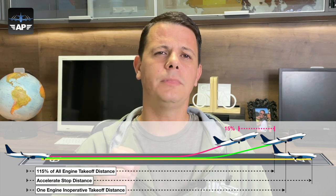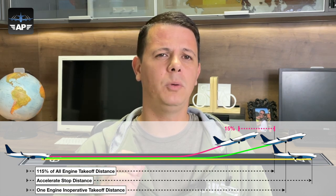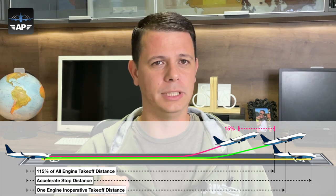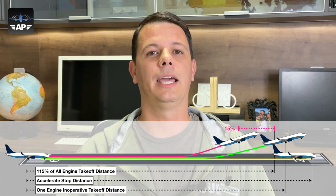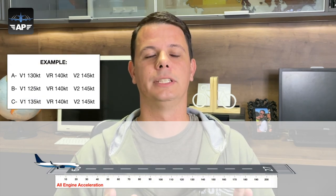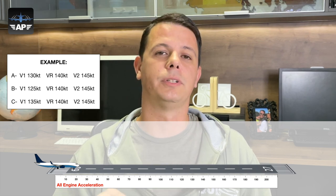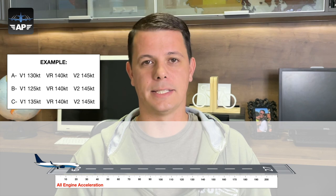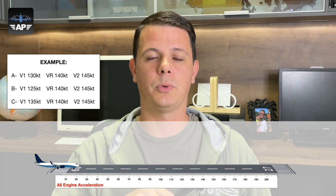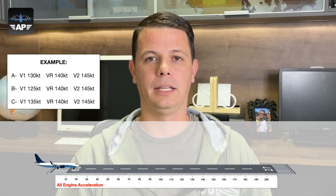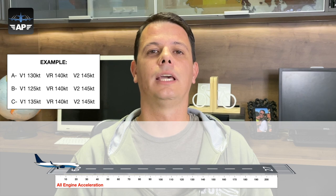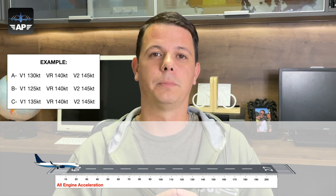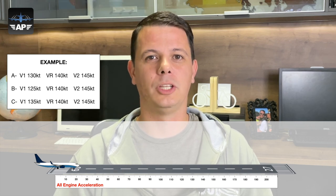What people sometimes don't understand is why V1 affects the engine-out go distance. I'm going to bring a scale here. This scale does not measure distance — it states at any point of the runway at which speed the airplane is. For example, when you read 80 on the scale, that means that at this point of the runway the airplane is already at 80 knots. The acceleration is not a constant thing, but for the purpose of our example, this scale will serve well.